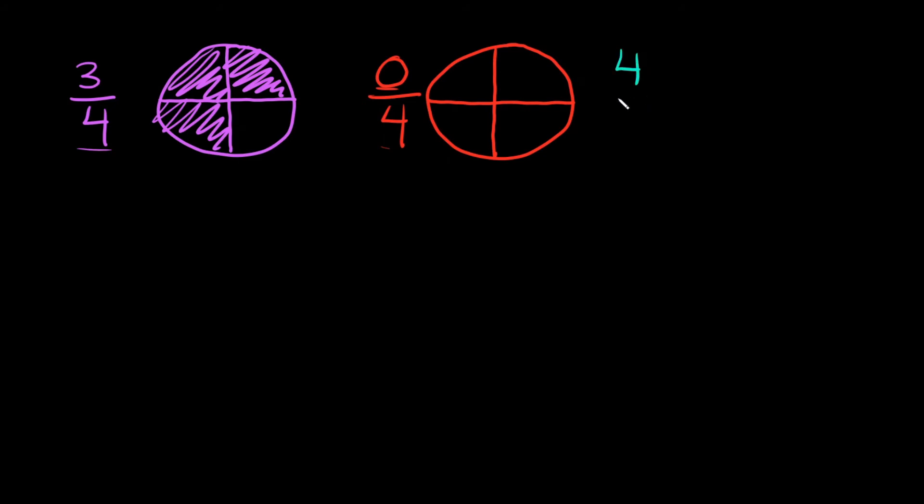But what if I had four over zero? And again I draw my pizza. So remember the bottom number tells you how many slices you cut it up into. So this is saying we have zero slices and then I'm saying I ate four of them. So we have zero slices of pizza and I ate four of them. Well that's impossible, right? You can't have zero slices of pizza and eat four of them. That doesn't even make sense. So that's why whenever you have a zero in the denominator it is undefined.